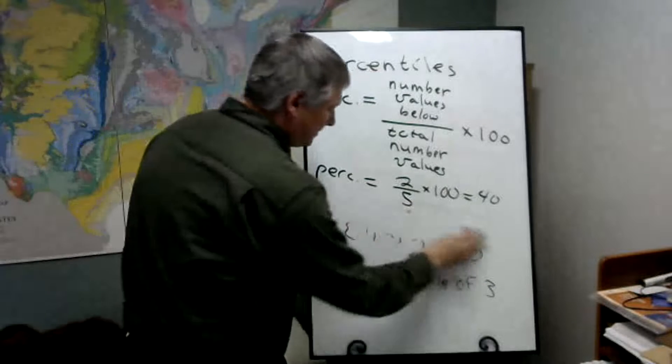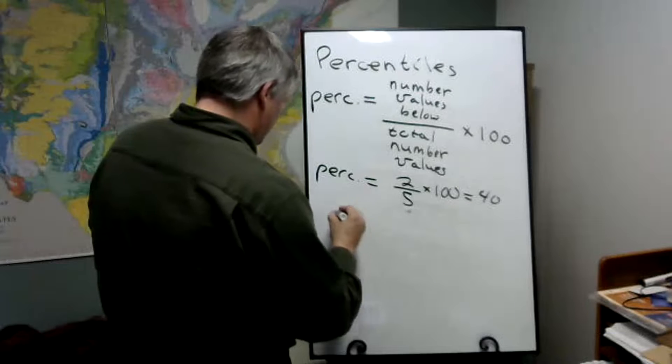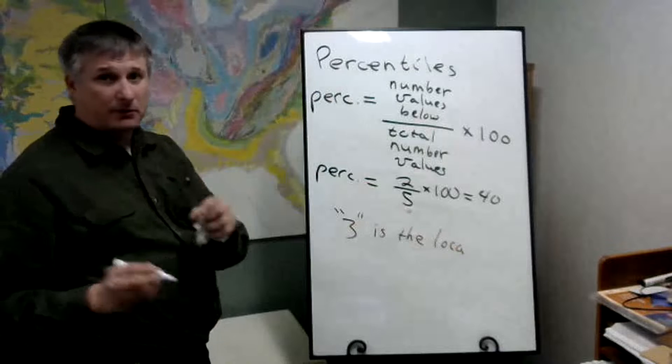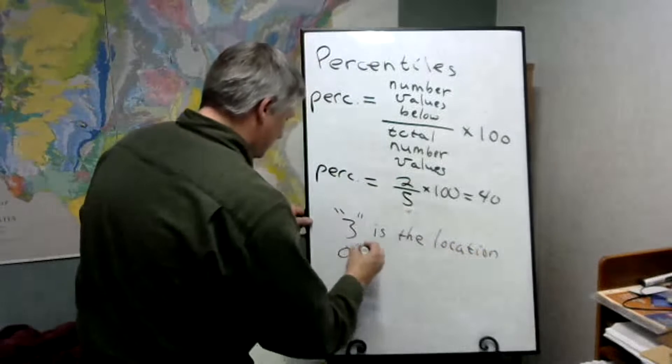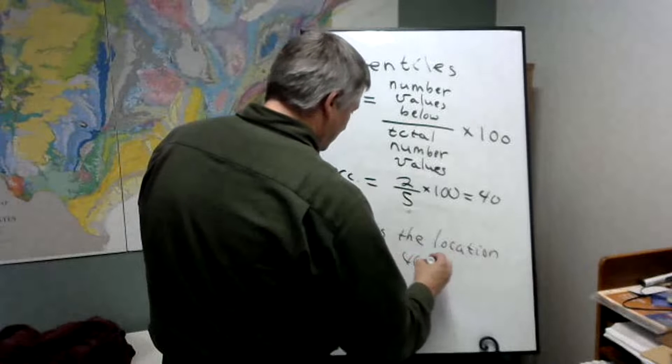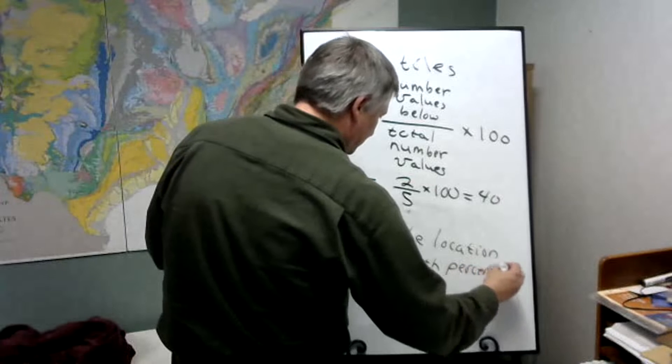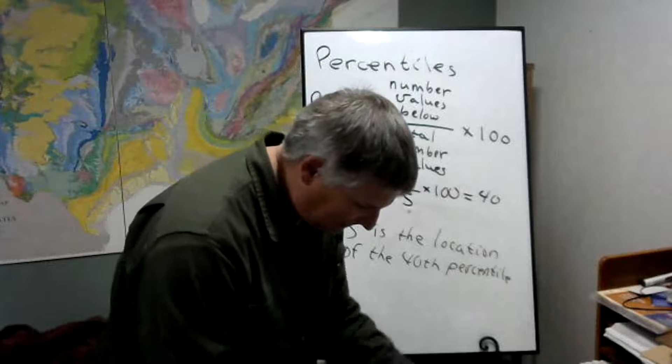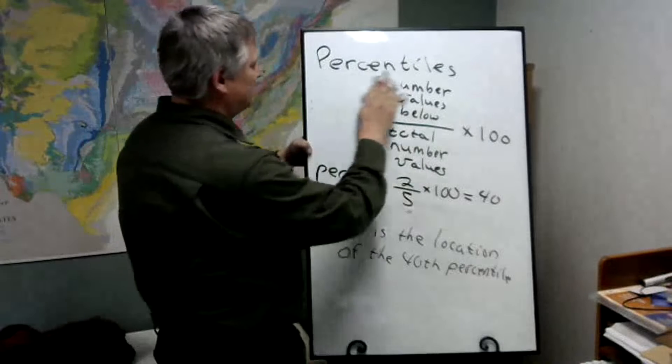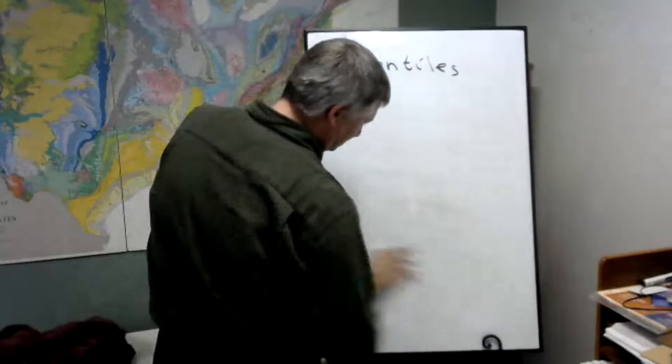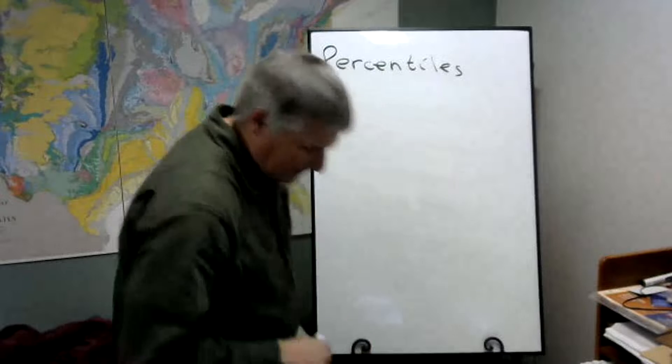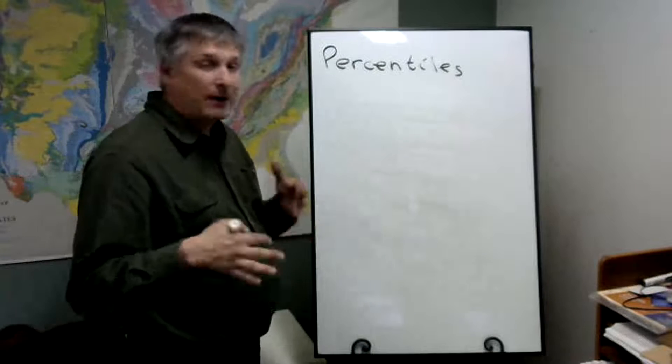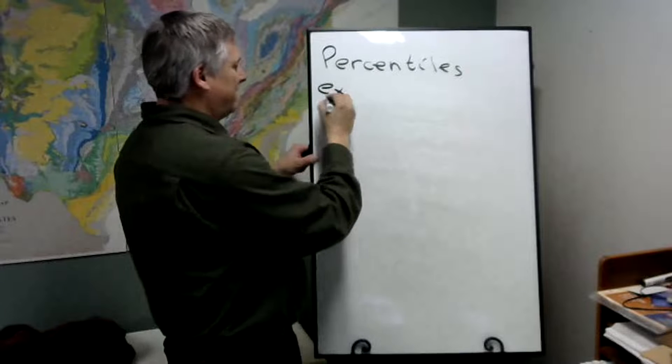So what this says: three is the location, and again location as long as the data is put in order, of the 40th percentile. So to use an example from the text, this is that data set I was talking about in the other video. It's on page 115 and I'm going to be referring to this throughout this section.